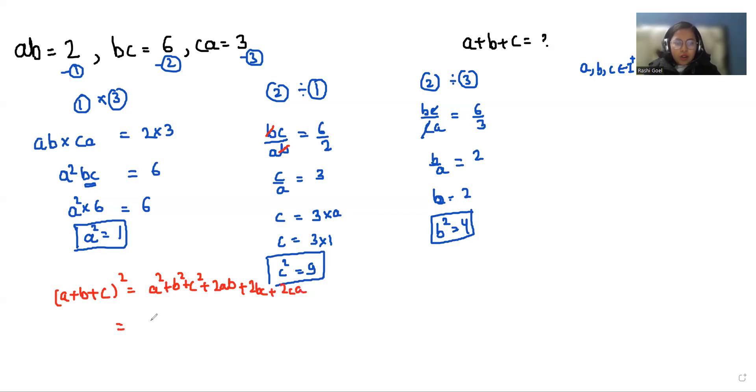So the value of A squared is 1. The value of B squared is 9. The value, sorry, B squared is 4. And the value of C squared is 9. 2 times AB from equation number 1 is 2. 2 times BC from equation number 2, that is 6. And CA from equation number 3 is 3.